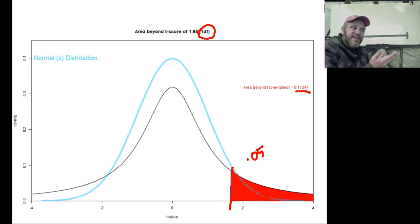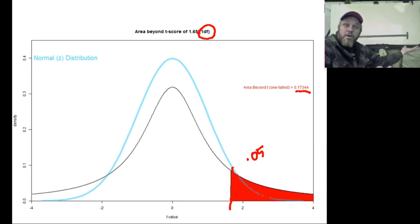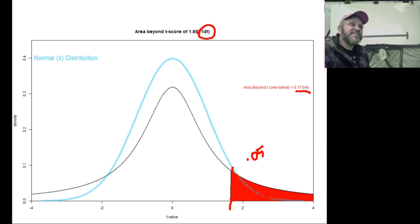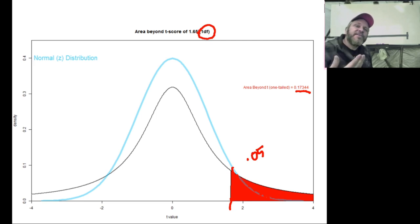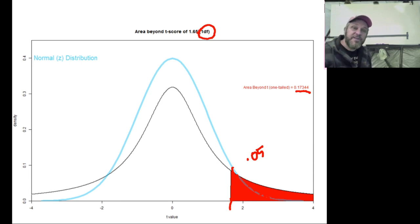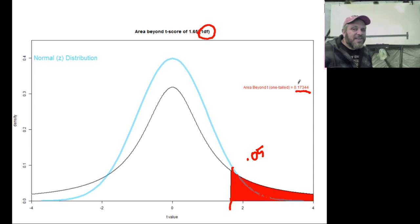How wrong we are if we just use Z to estimate population values depends on how big our sample size was. Bigger sample size — we're not very wrong. Small sample size — very wrong. Which makes sense: if you just have a few people from the population, of course you're more likely to be wrong about what the entire population is doing. The T formula compensates for that. Degree of freedom means n minus 1. For one degree of freedom — that means two people in the sample — the difference is horribly large, very different.